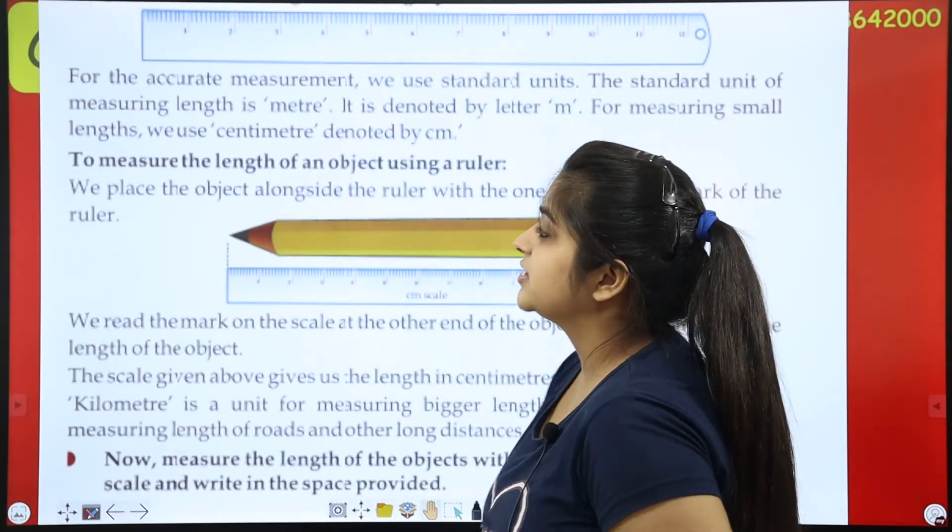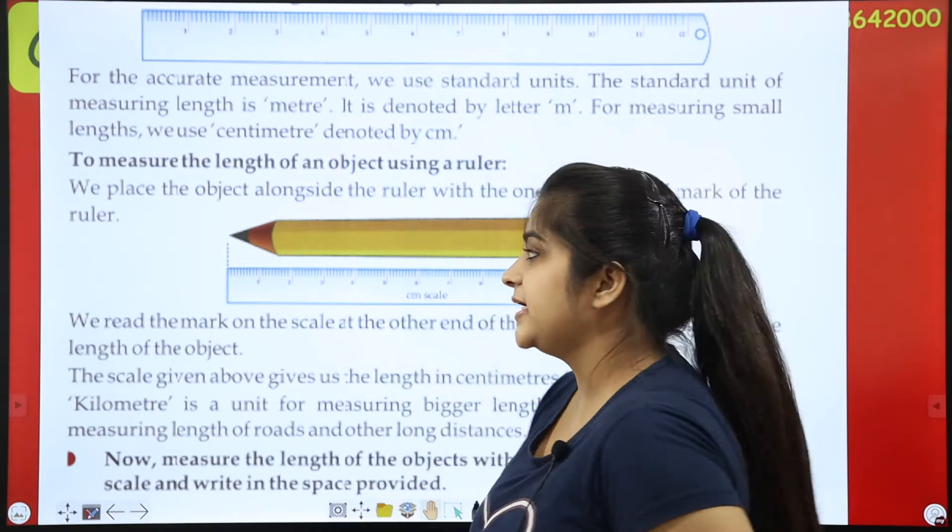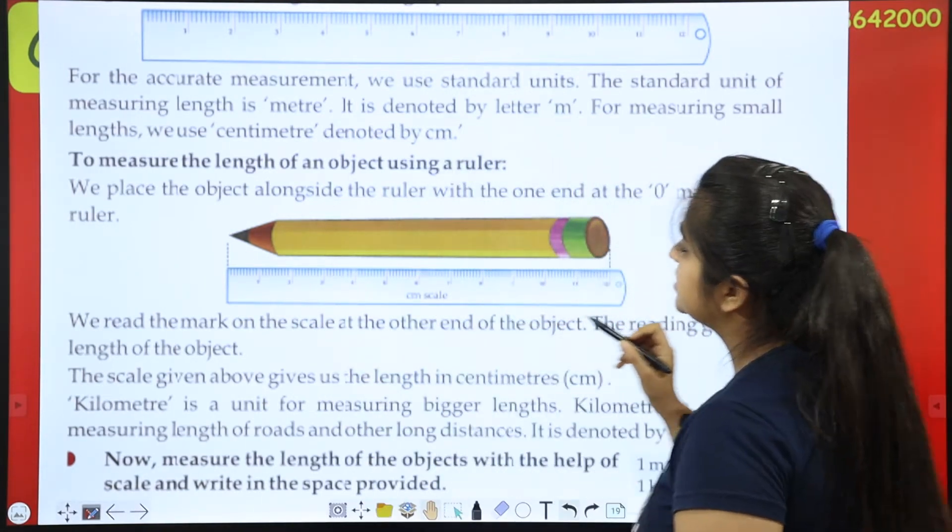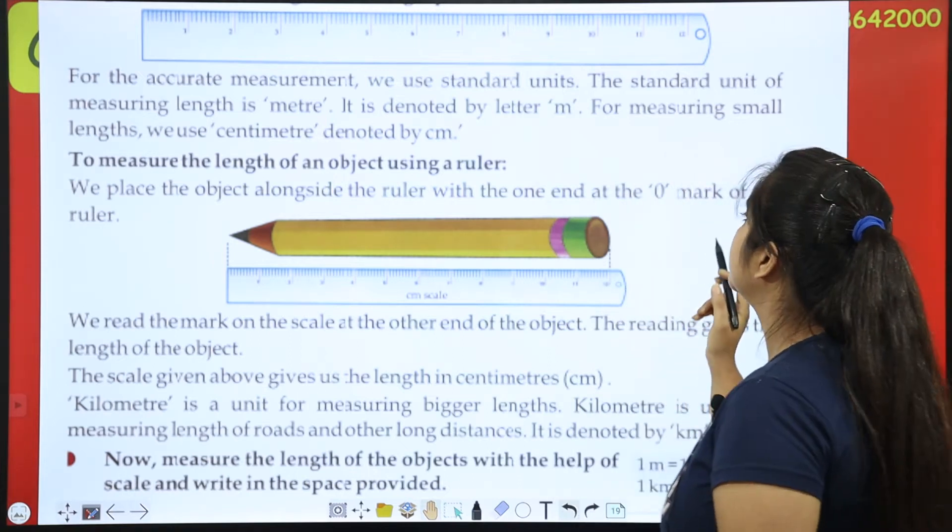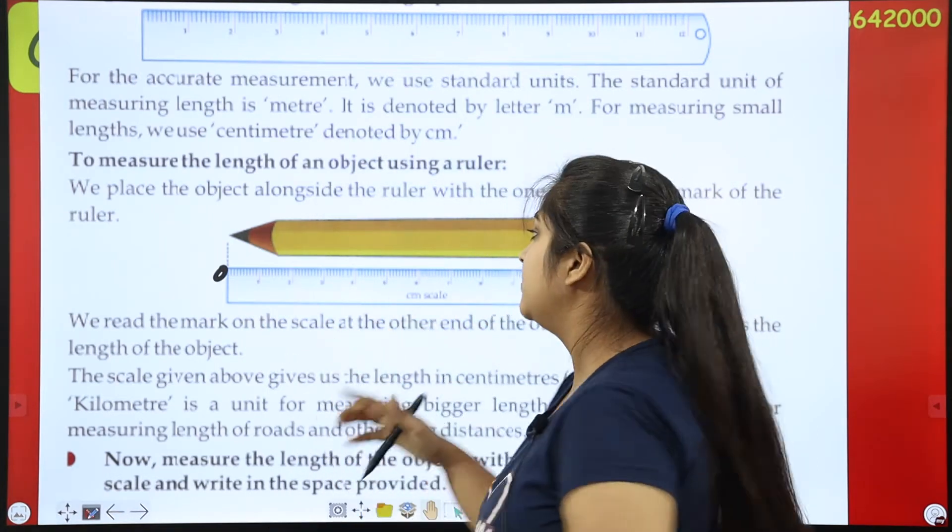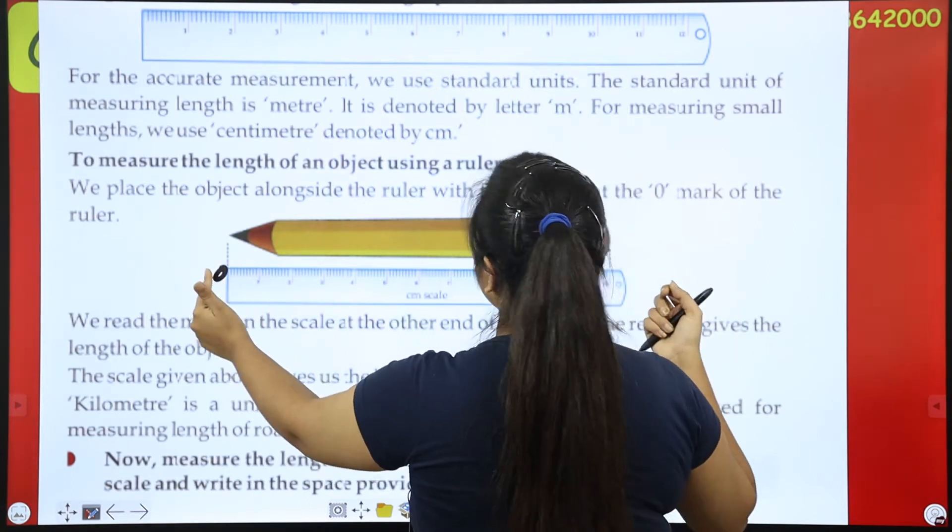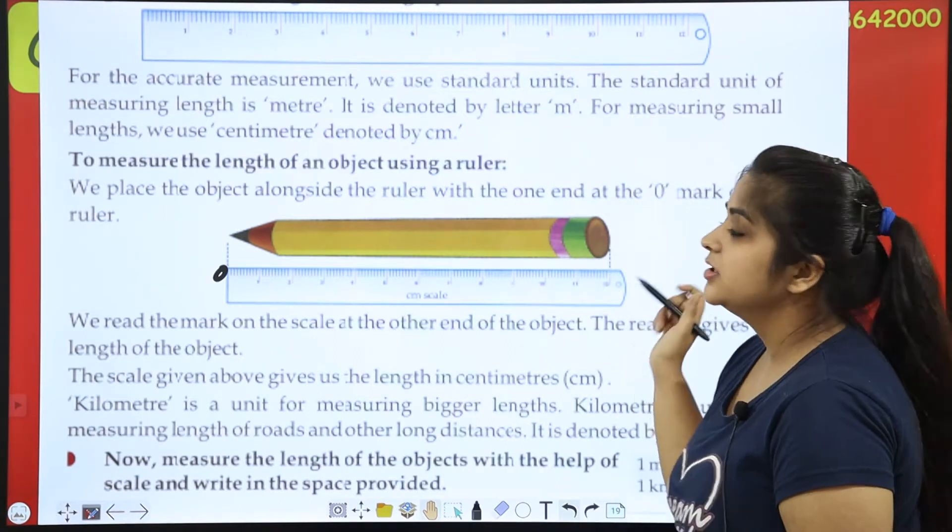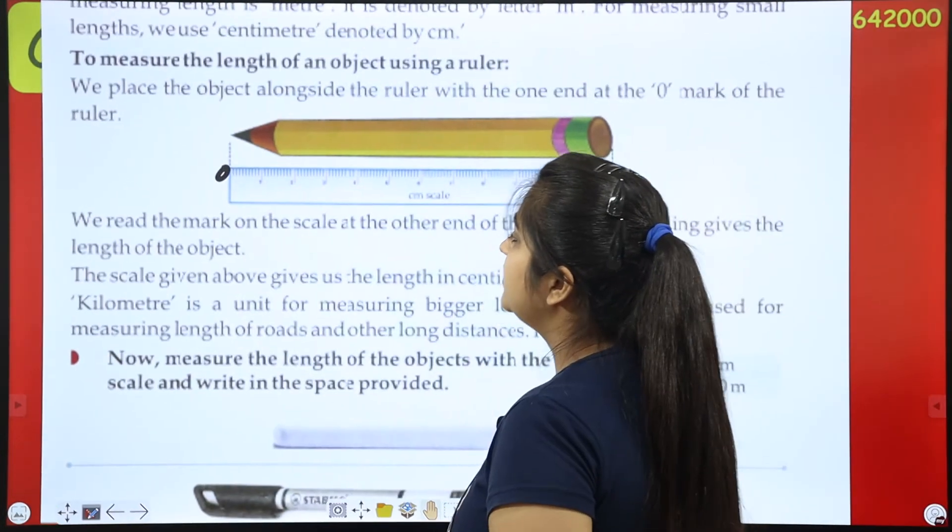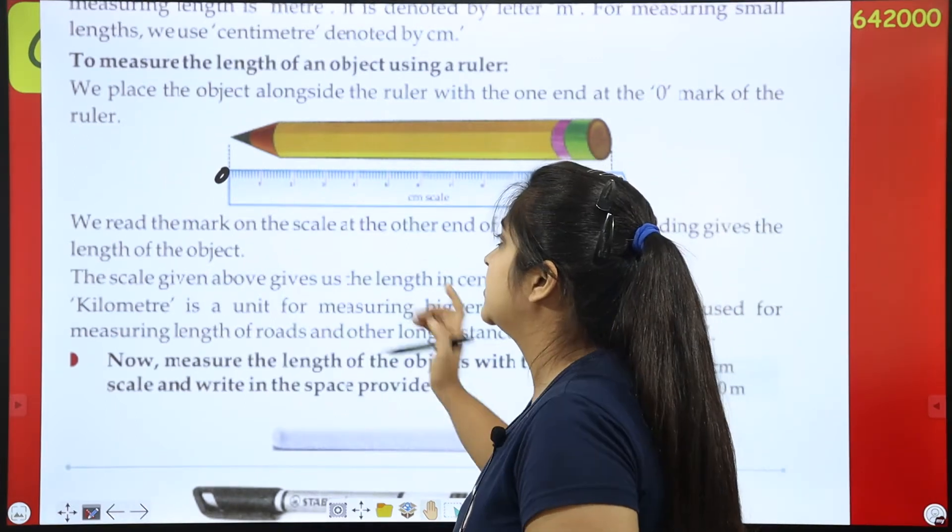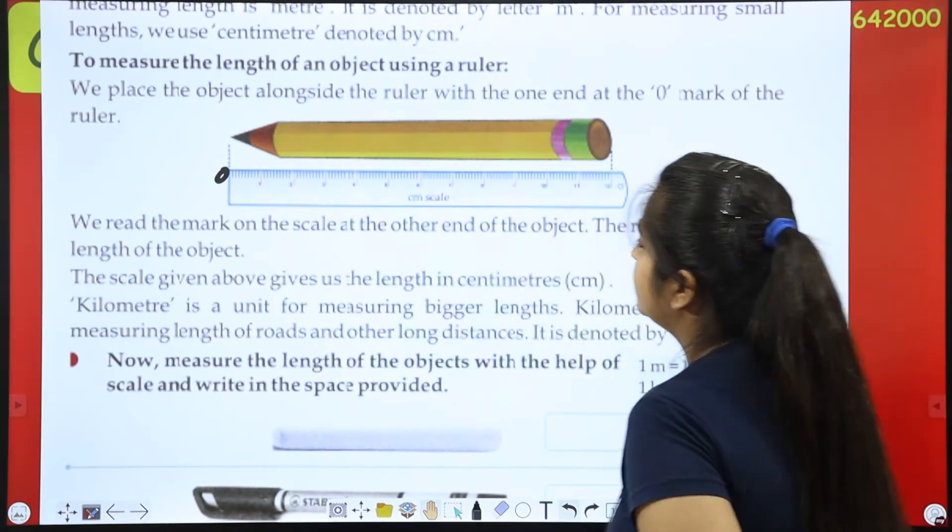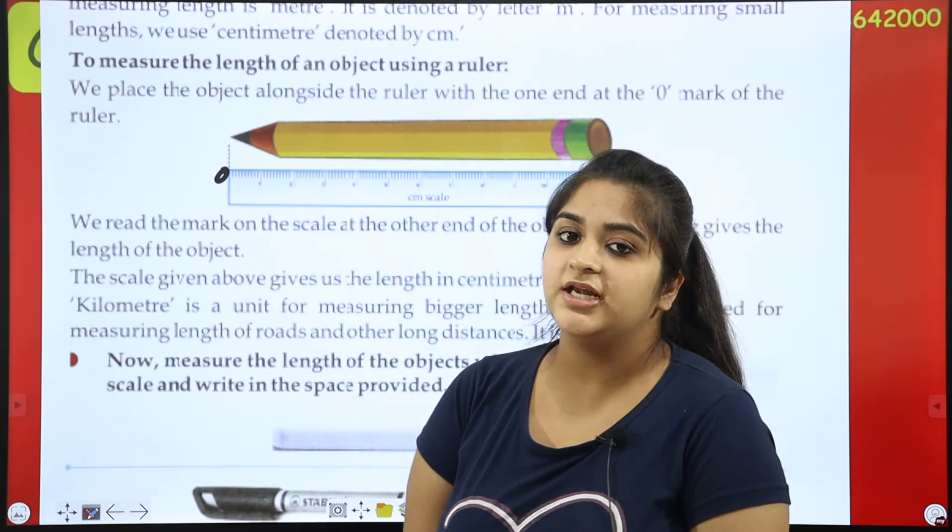To measure the length of an object using a ruler. If we don't have any length, we don't have a ruler, or scale. We place the object alongside. We keep it with the object. With the one end. And our scale starts from zero. So from zero, we keep it from zero. This is zero. It starts from one. It starts from 10. So it means this is 10 cm. So now, we read the mark on the scale, at the other end of the object. We have seen from one end to the other end that its length is how much. The reading gives the length of the object. And if we read it, we will get to know how much its length is.